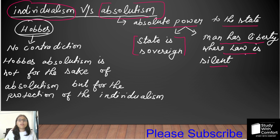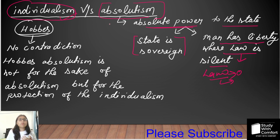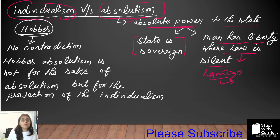The other dimension of absolute power of the state is that the individual can enjoy liberty only where law is silent. Man has liberty where law is silent — this simply means that if law is created, individuals must obey the law. If an individual breaches the law, punishment will come from the state. So some scholars believe that Hobbes starts from individualism but ends in absolutism.